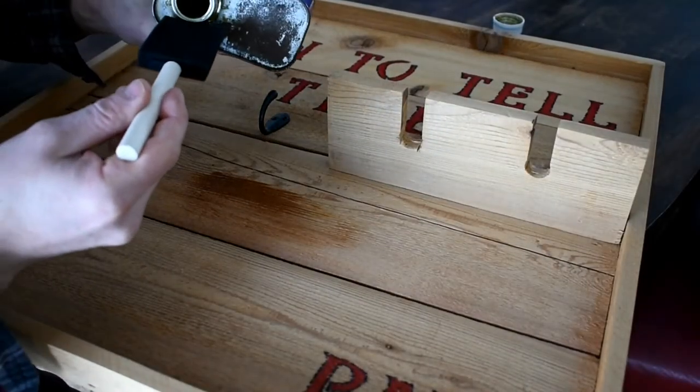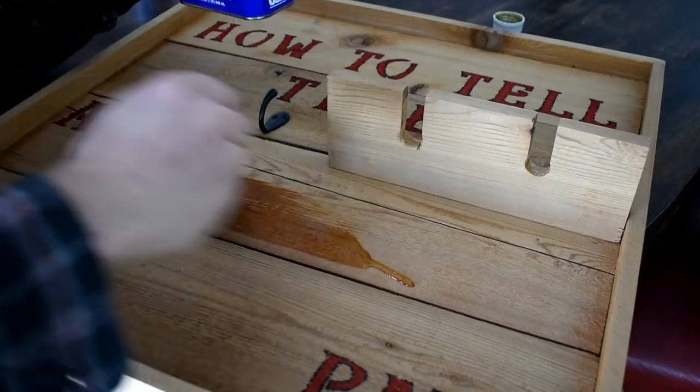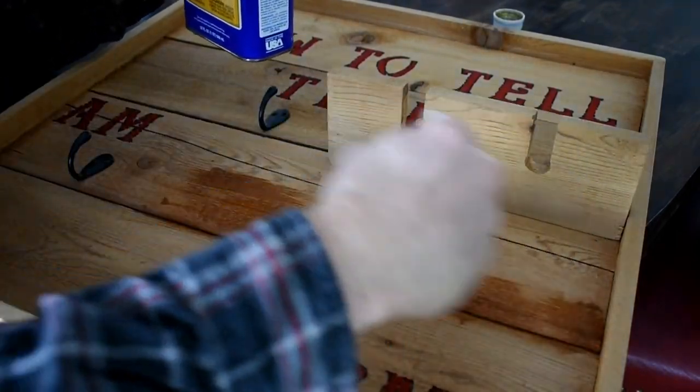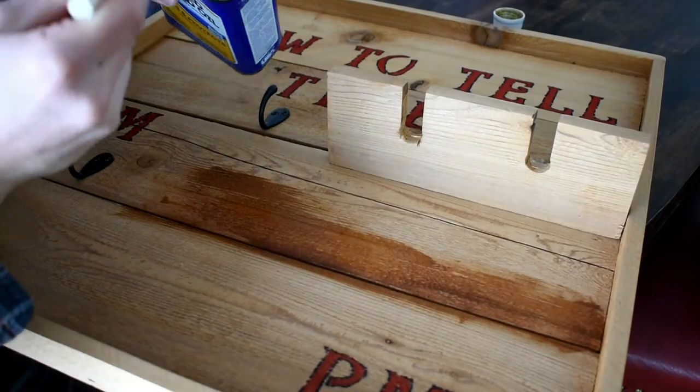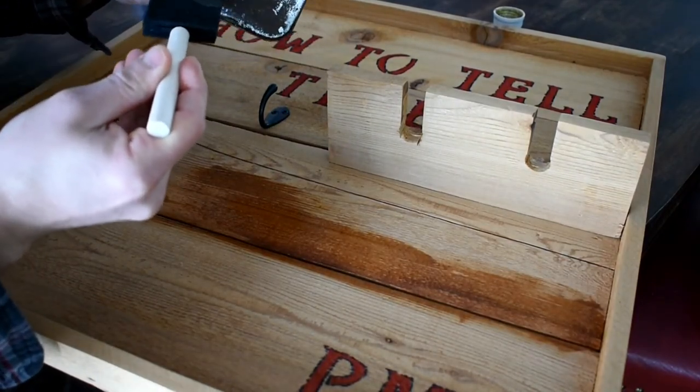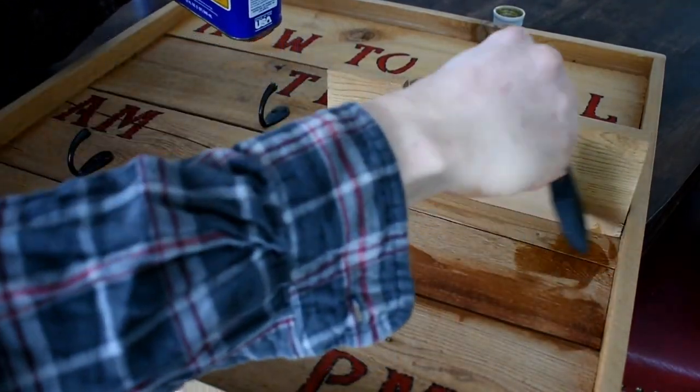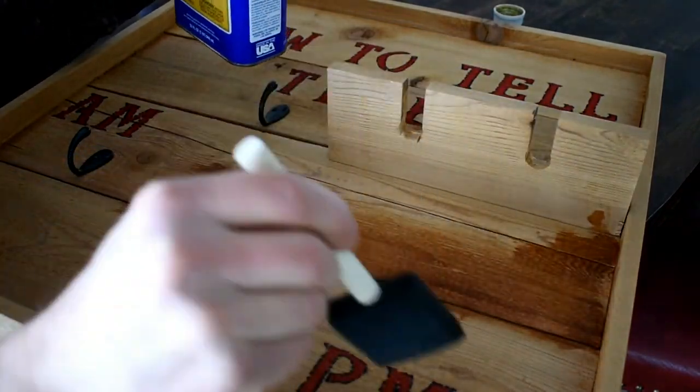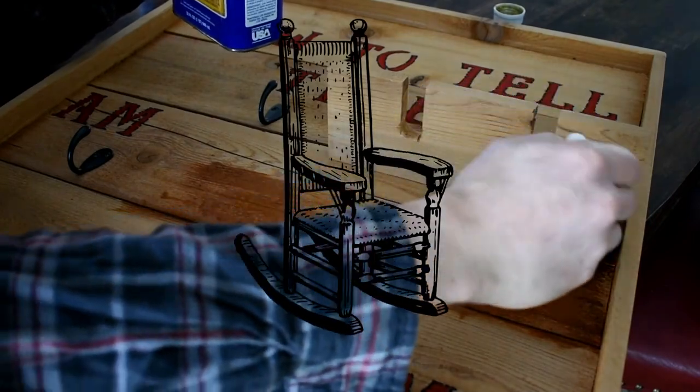All right, our final step is to just put some sort of protective coating on here. I like to use linseed oil or tung oil because I like the way it looks. You could also use polyurethane or something similar. Just be sure that you take extra precaution around your paint or your Sharpie or whatever you use to paint here because you don't want to smear it.